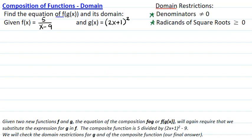Given two new functions f and g, again we are looking for the equation of the composite f circle g of x. This equation is f with g(x) replacing x in the equation. This time, g(x) = (2x+1)². It's going to come inside of f in the place of x. The equation of the composite function is 5/((2x+1)² - 9).